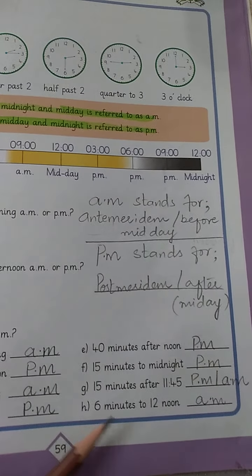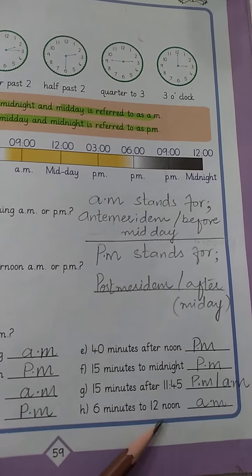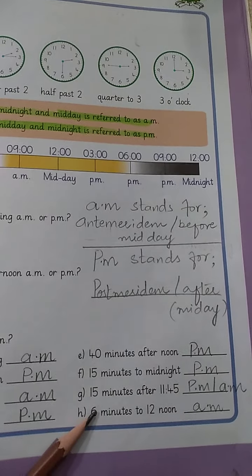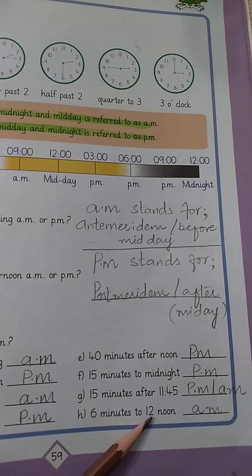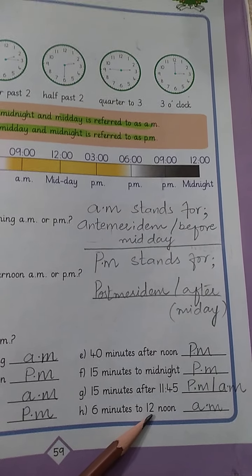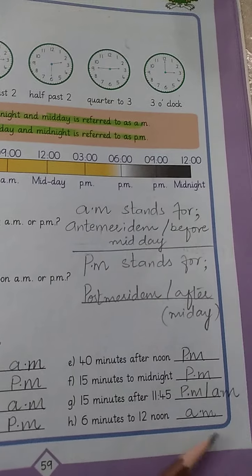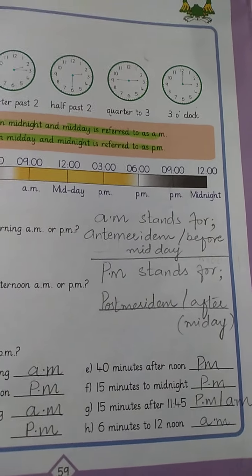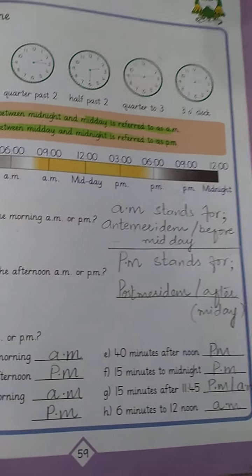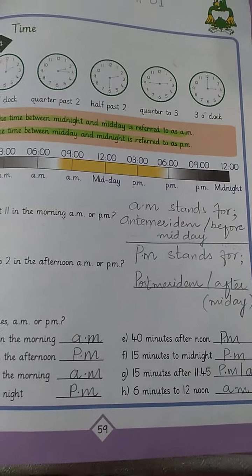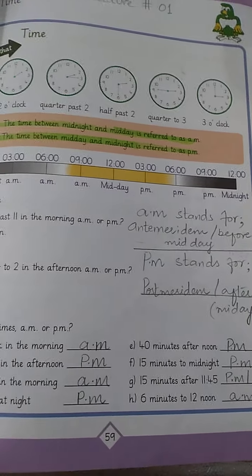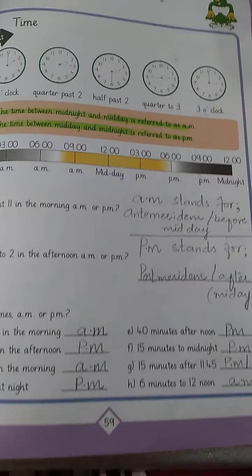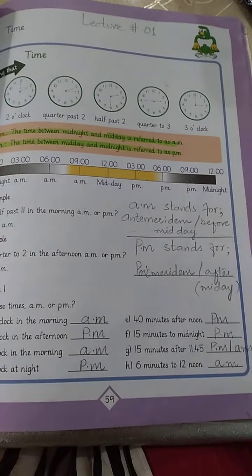Number g: 6 minutes to 12 noon — its mean que abhi dopahar ke 12 bajne mein 6 minutes baqi hain, toh aap yahan par a.m. lagayenge. I hope that you have done this exercise in your books. Kindly practice this exercise. Thank you students, Allah Hafiz.